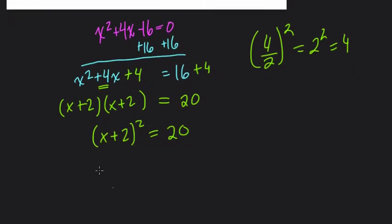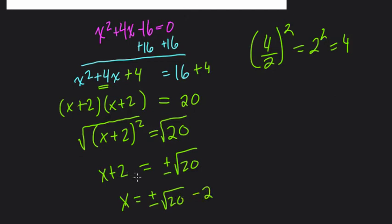Now, to solve, what I like to do at this point is take the square root of both sides. The square root of (x + 2)² is x + 2. Here, the square root of 20, we're going to write as the positive or negative square root of 20. And then x is going to equal the positive or negative square root of 20 minus 2. I subtracted 2 from both sides.